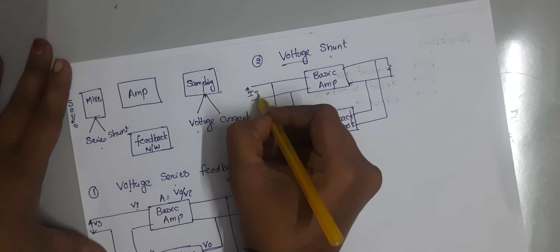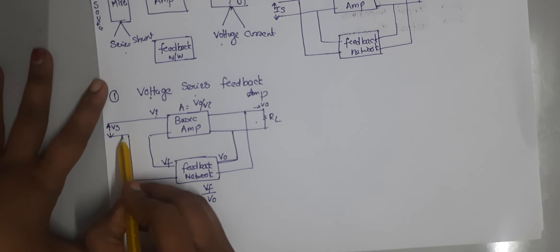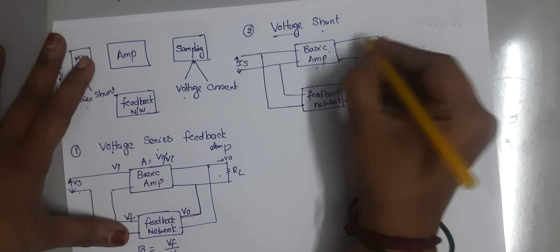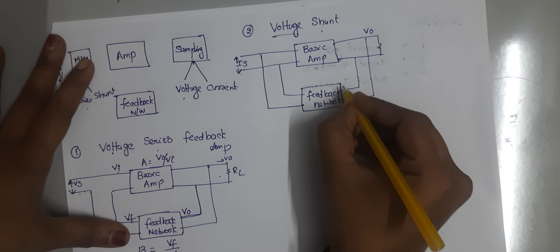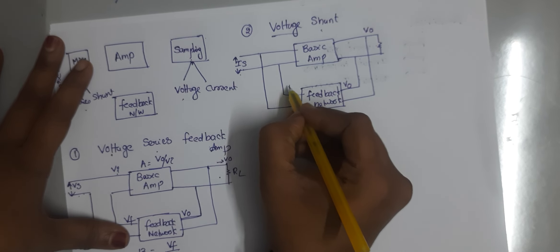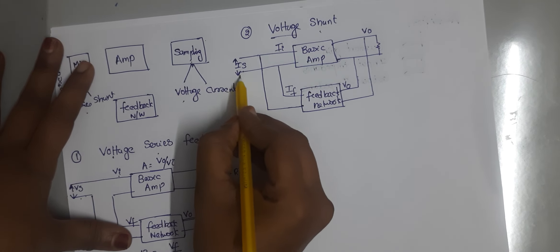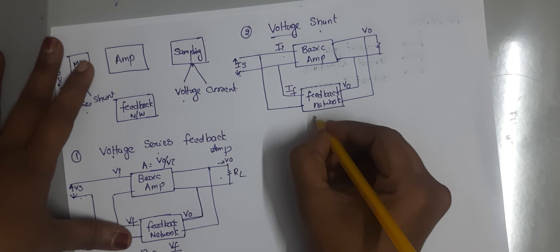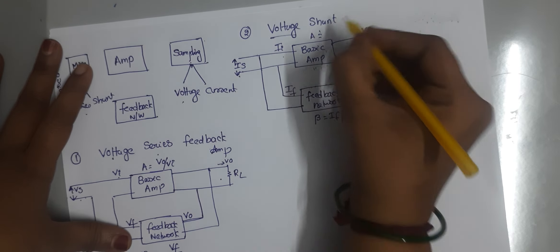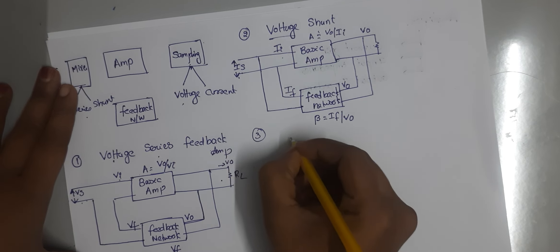When the mixing is shunt mixing, the input source is a current source IS. So shunt mixing means the input source is a current source. Voltage sampling at the output gives V0, and the input to the feedback network is V0. Since mixing is shunt mixing, the source is current, so the feedback signal is IF. The feedback factor beta is equal to IF divided by V0, and A is equal to V0 divided by Ii. This completes the voltage shunt topology.